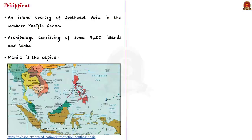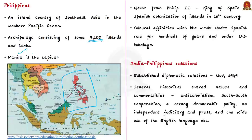The Philippines is an island country of Southeast Asia in the Western Pacific Ocean. It is an archipelago consisting of around 7,100 islands and islets, and Manila is the capital. The Philippines takes its name from Philip II, who was the king of Spain during the Spanish colonization of the islands in the 16th century. Since it was under Spanish rule for hundreds of years and later under US protection, the Philippines has many cultural similarities with the West.